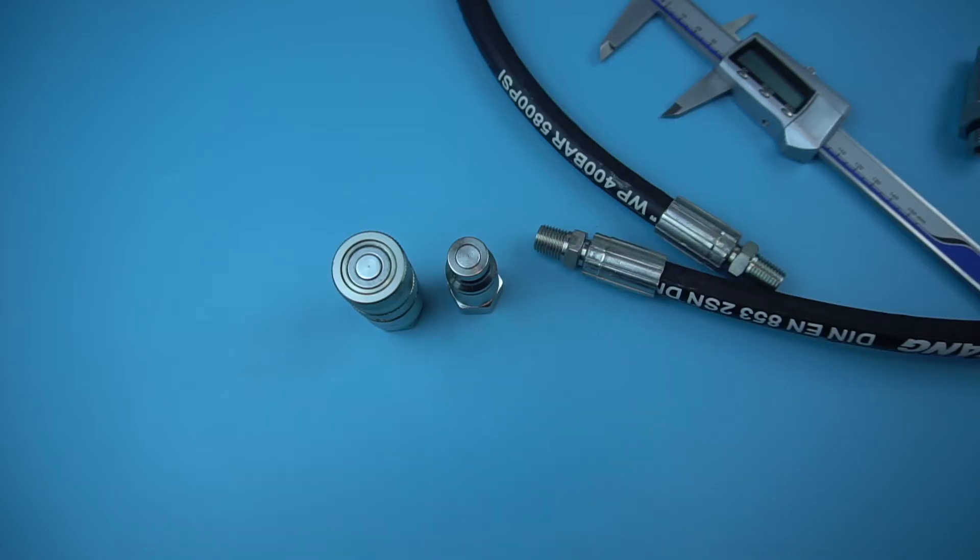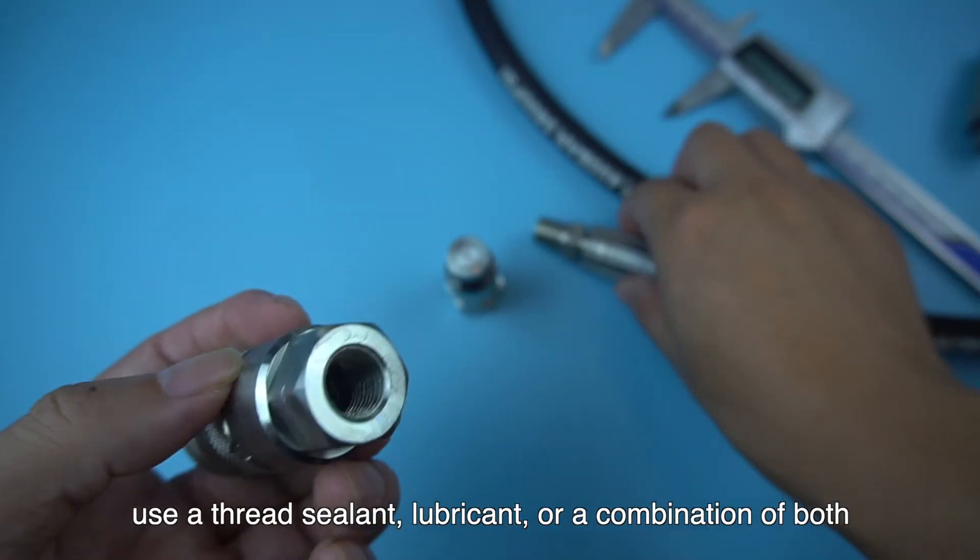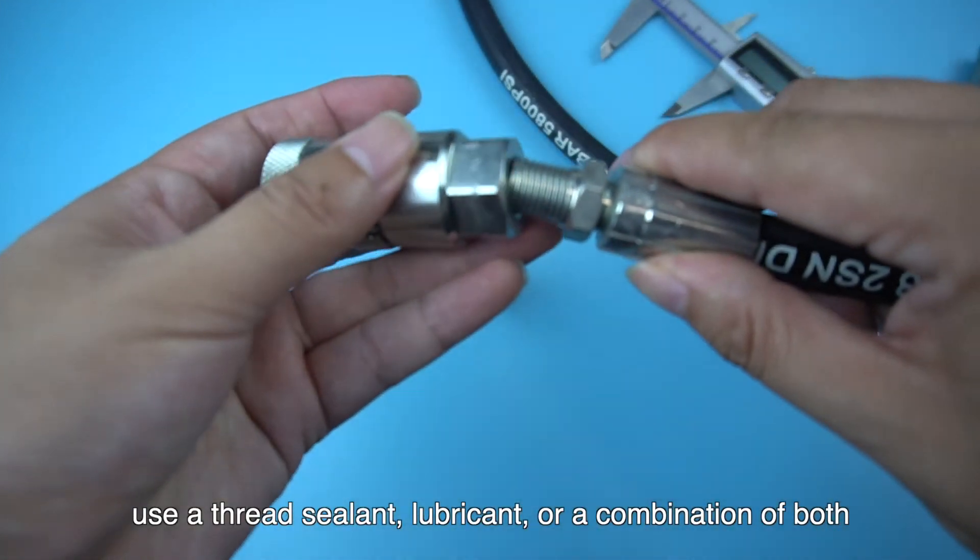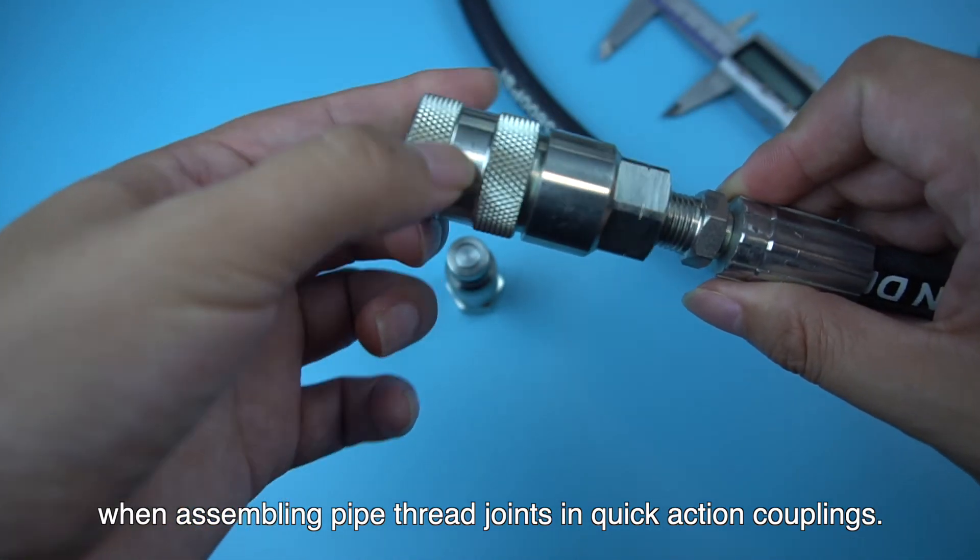How to use the flat face quick coupling? The threads are used to connect to the hose thread or the machine. Use a thread sealant, lubricant, or a combination of both when assembling pipe thread joints in quick action couplings.